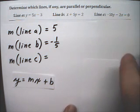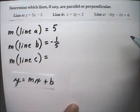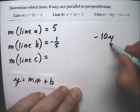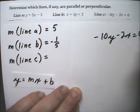And line C is almost in slope. No, it's not even close. Minus 10y minus 2x equals 0.